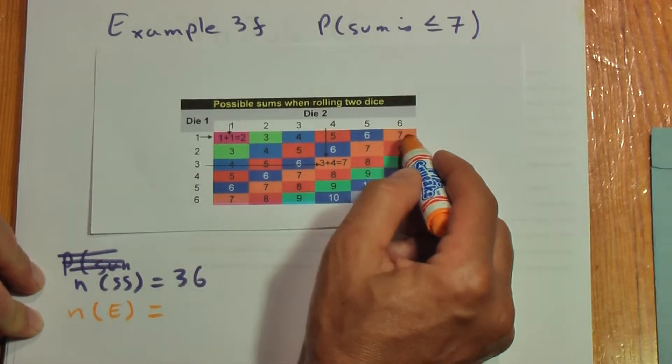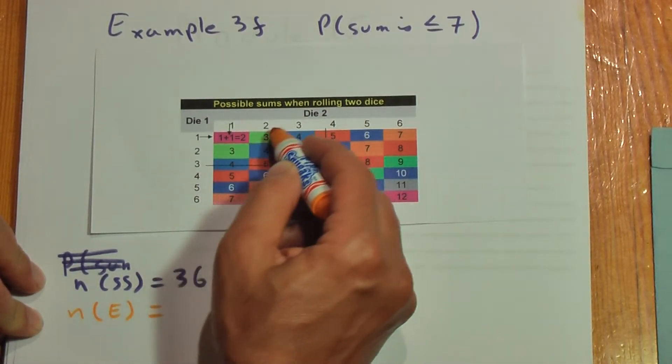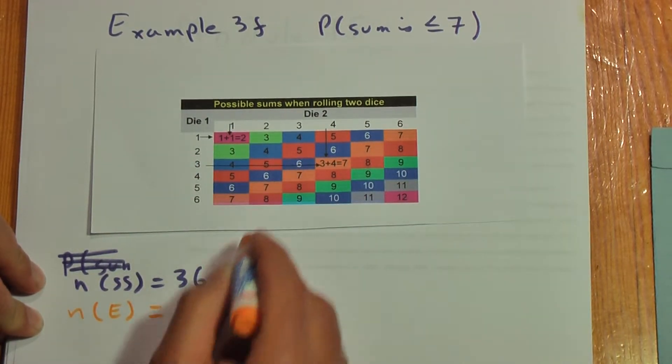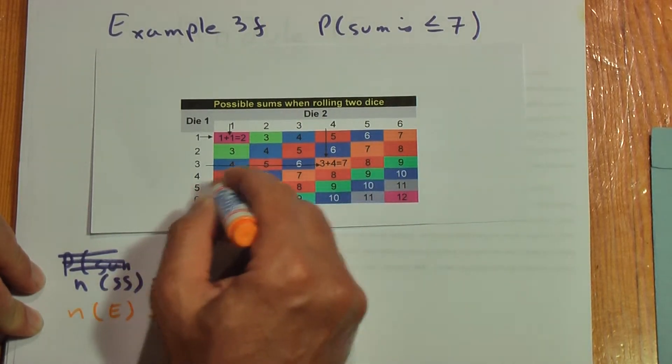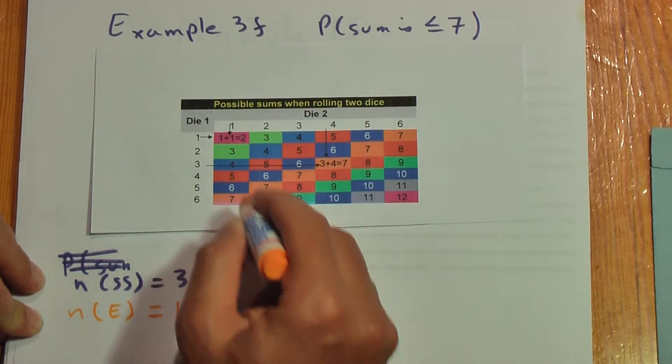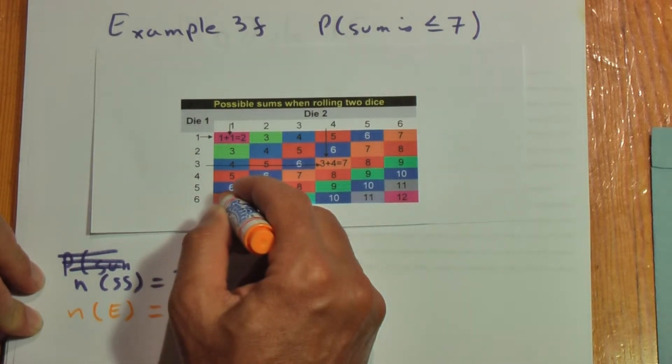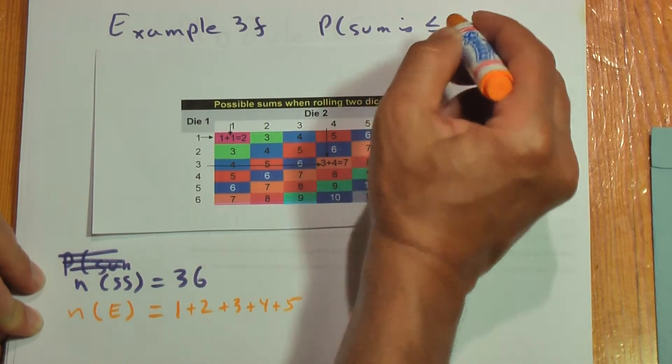We'll start with 2. There's one way of getting a 2, two ways of getting a 3, three ways of getting a 4, four ways of getting a 5, five ways of getting a 6, and six ways of getting a 7. Do we include the 7? Yes, because it's less than or equal to.